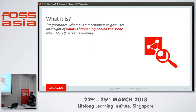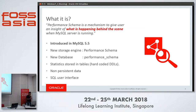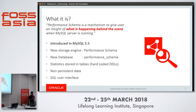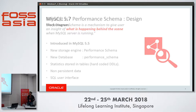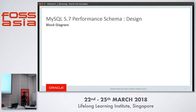If you ask me to define Performance Schema, I'd say it's an insight into a running MySQL server — what is happening behind the scenes when the server is running. We introduced Performance Schema in MySQL 5.5 with a new pluggable storage engine and a new database called performance_schema. All the tables in which we collect statistics are part of this database. The statistics tables have hard-coded DDL, meaning users are not allowed to modify their structure. The data is not persistent — it is the runtime statistics of the server. When the server is gone, the data is gone. We have a SQL user interface so you can fire queries to get statistics of a running server.